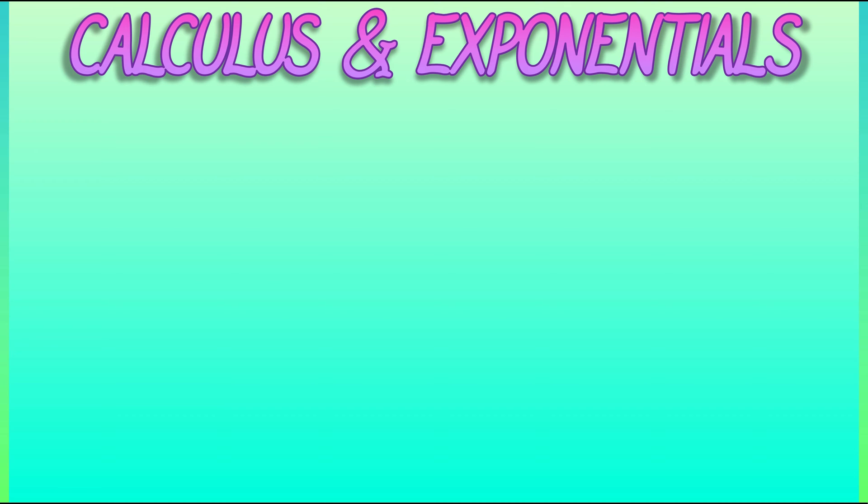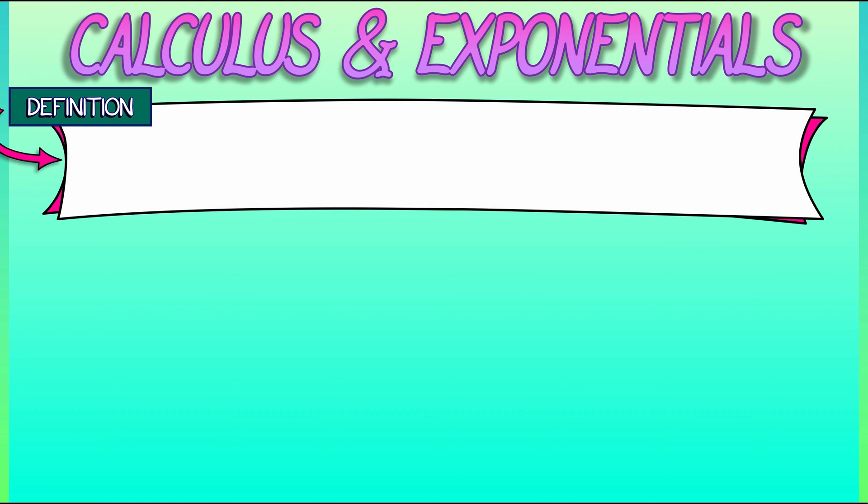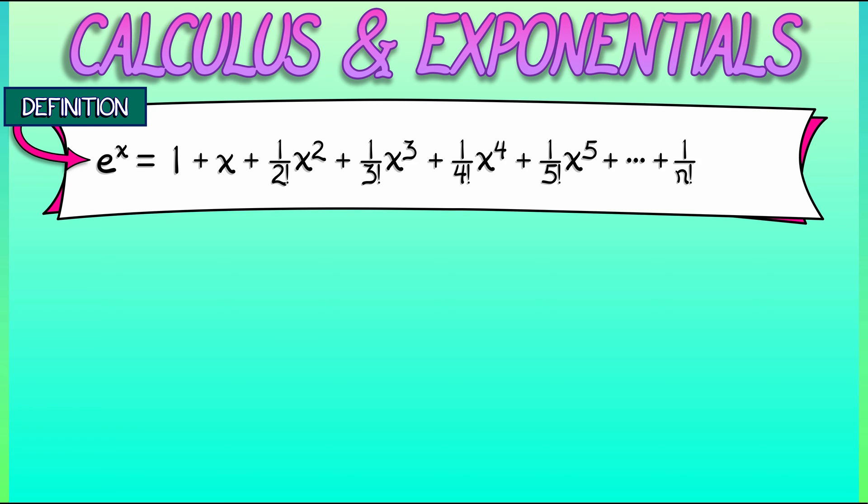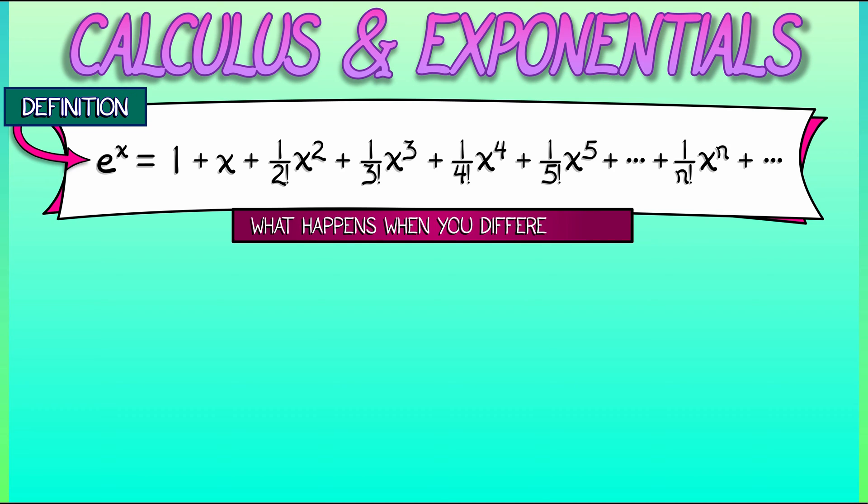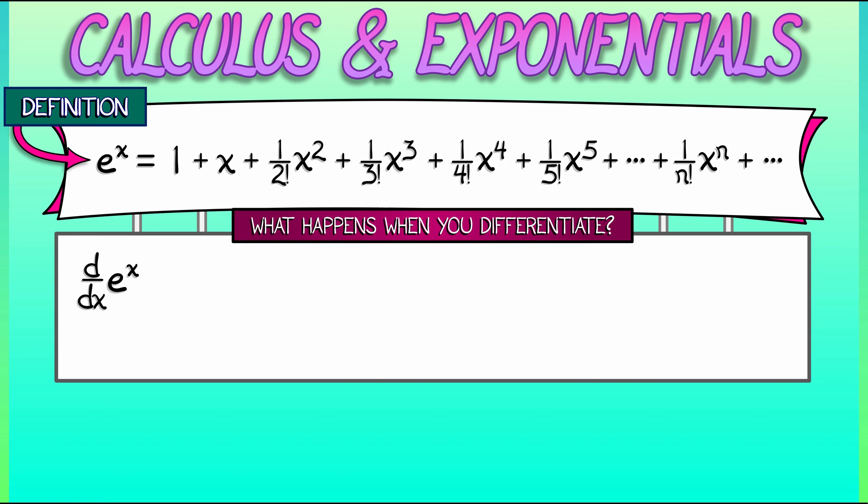Let us consider the definition of e to the x. That is 1 plus x plus x squared over 2 factorial plus etc, etc. Now, what's the derivative of e to the x? Do you remember that? We might be able to figure it out given what we know about polynomials. What happens when we take the derivative of e to the x? What's the derivative of 1? Well, that's 0.